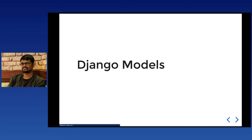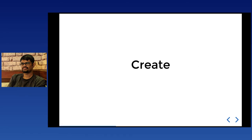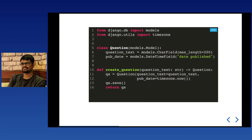Next, Django models — the create method. Here's a simple model `Question` with two explicit fields: `question_text` as a `CharField` and `pub_date` as a `DateTimeField`. There's a helper method `create_question` which takes a question text and returns a `Question` instance — a simple way to create a question object.